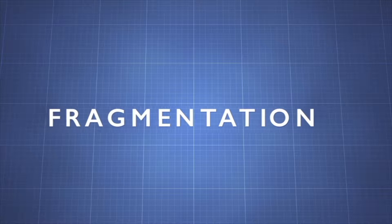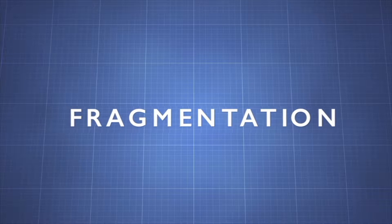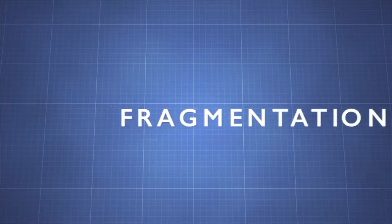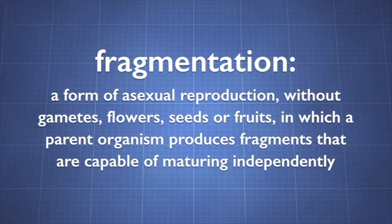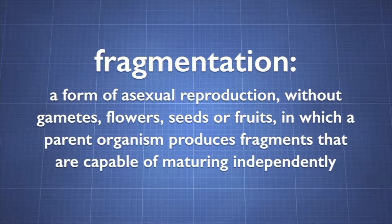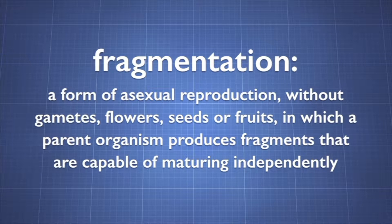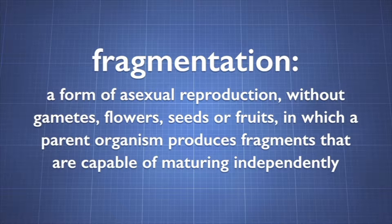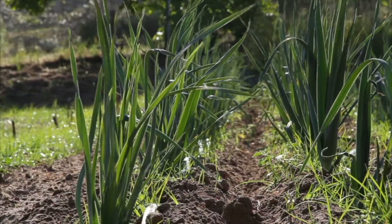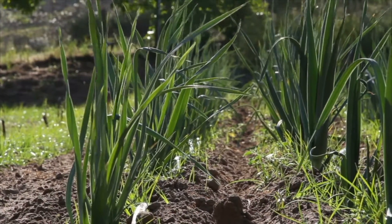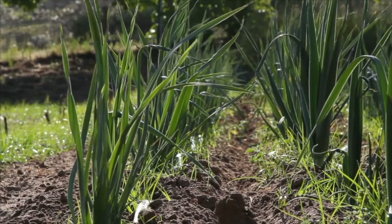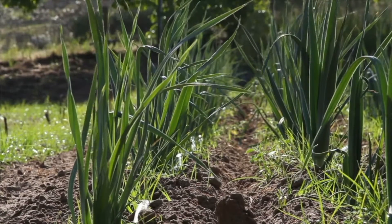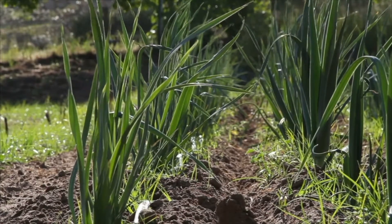A common form of asexual reproduction is fragmentation. Fragmentation is a form of asexual reproduction without gametes, flowers, seeds or fruits, in which a parent organism produces fragments that are capable of maturing independently. Fragments of the parent organism split or break off, and each fragment can mature independently into a new organism to continue the reproductive cycle.